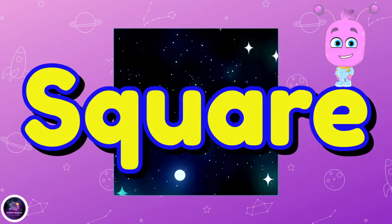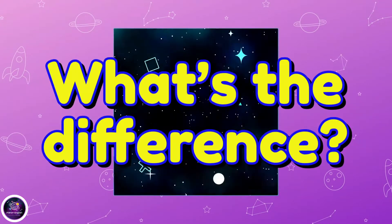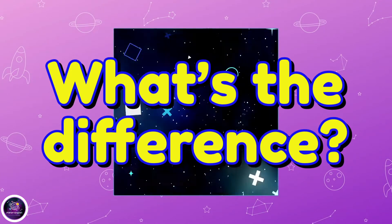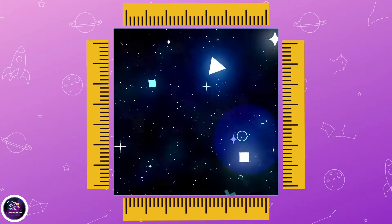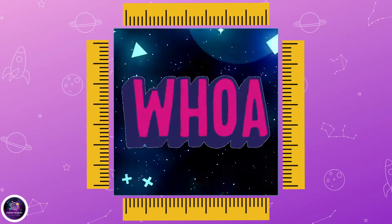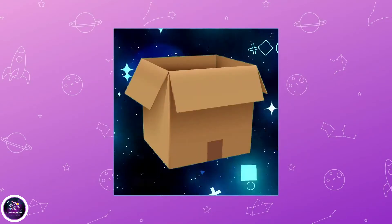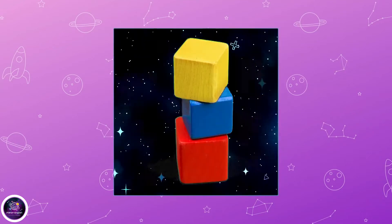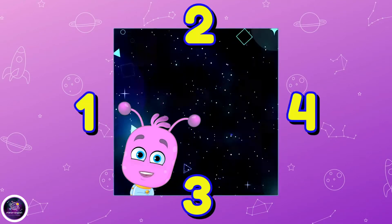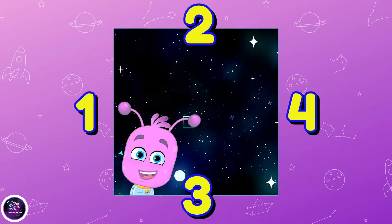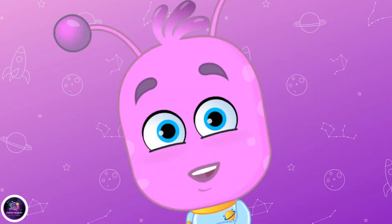A square is a bit like a rectangle, so what's the difference? A square's sides are all the same length — like the sides of dice, or a cardboard box, or brightly colored building blocks. A square has four equal sides!